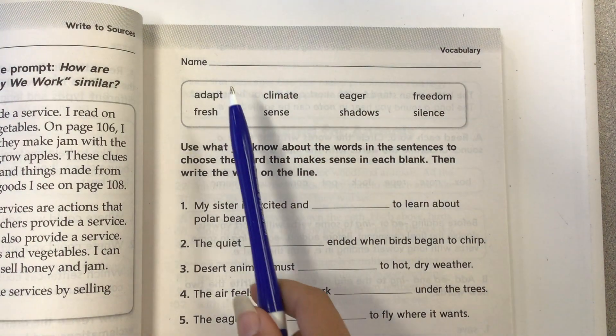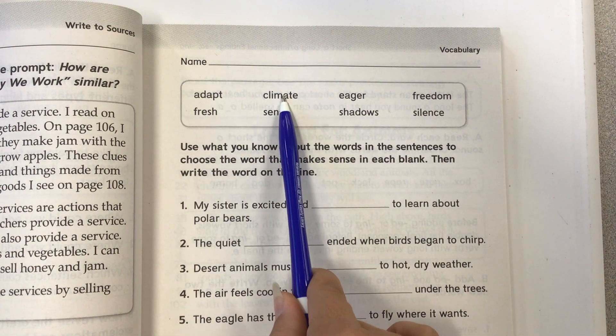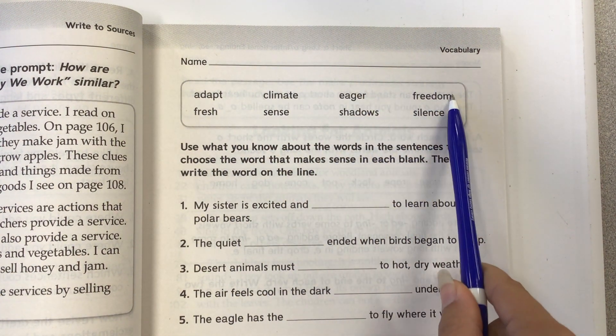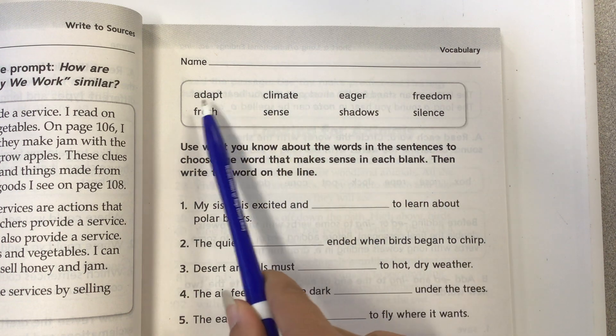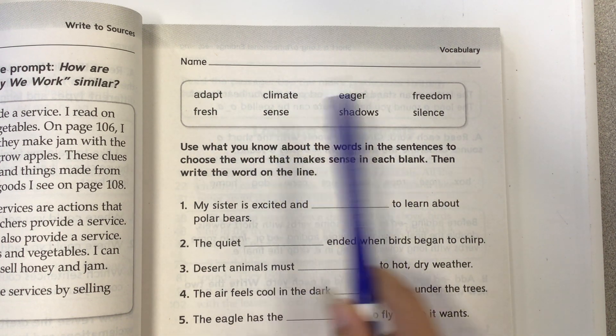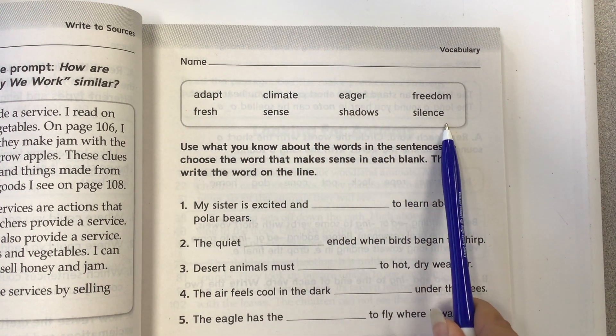These are our vocabulary words: adapt, climate, eager, freedom, fresh, sense, shadows, silence.